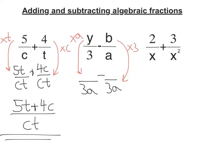So I'm going to get Y times A is AY. B times 3 is 3B. So now I have a common denominator. I can take away the tops. So I've got AY minus 3B over 3A. AY minus 3B does not simplify, so there's my answer. The last one here,